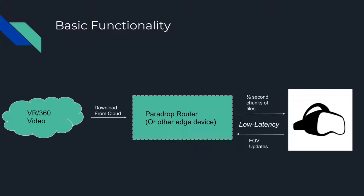The basic idea is that we're going to use this PearDrop router, which is an edge device — basically a computer that's located in the router on your wireless network. What the router does to save bandwidth over the wireless link is it downloads the video from the cloud and splits the video up into basically eight different tiles. The sphere is broken into eight different tiles, and then those tiles are broken up into time chunks — half second chunks that the headset can download.